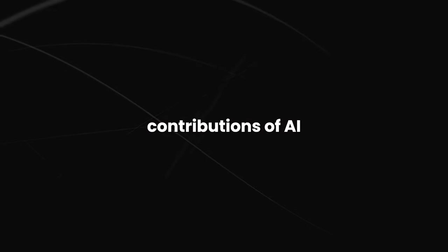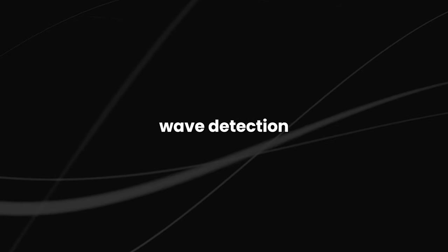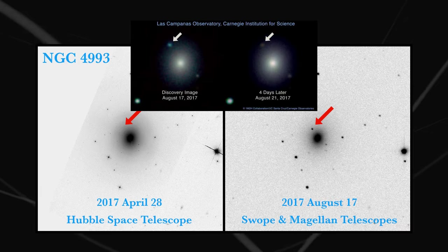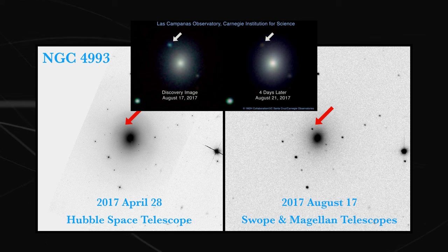One of the most important contributions of AI in the field of gravitational wave detection is its ability to search for signals from previously unknown phenomena. For example, AI was used to search for signals from the merger of two neutron stars, an event that had never been observed before.